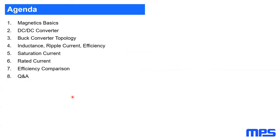Going through the agenda, we will handle some basics for magnetics and how the inductor works, moving forward to the DC-DC converter introduction, and going into more detail on buck converter topologies, discussing the relation between topology and inductance, ripple current, efficiency, and differentiating saturation current and rated current, and seeing some efficiency comparison results.